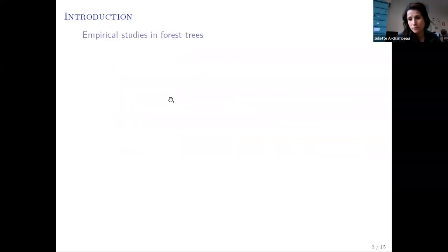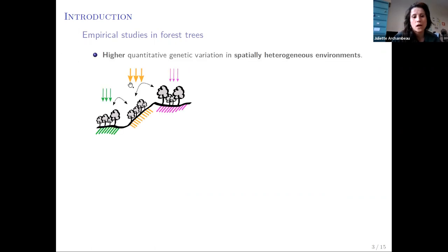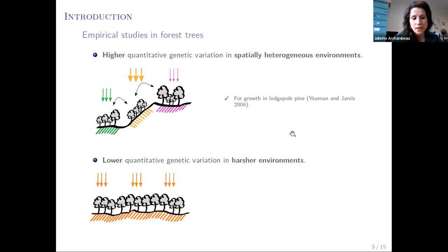A few empirical studies have investigated how quantitative genetic variation is maintained within forest tree populations. Higher quantitative genetic variation in spatially heterogeneous environments due to the joint effect of gene flow and varying selection pressures was found for growth in lodgepole pine. And lower quantitative genetic variation in harsh environments, probably due to strong selection pressures, was found for functional and growth traits in a neotropical tree.